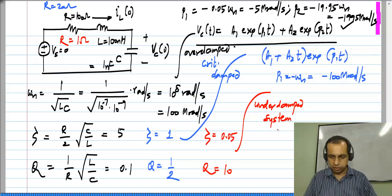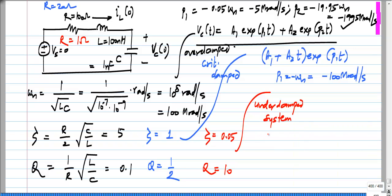And in this case, the response will be of the type A_0 exponential P_r t cosine P_i t plus phi. And we have two constants A_0 and phi, which are to be found out from initial conditions.